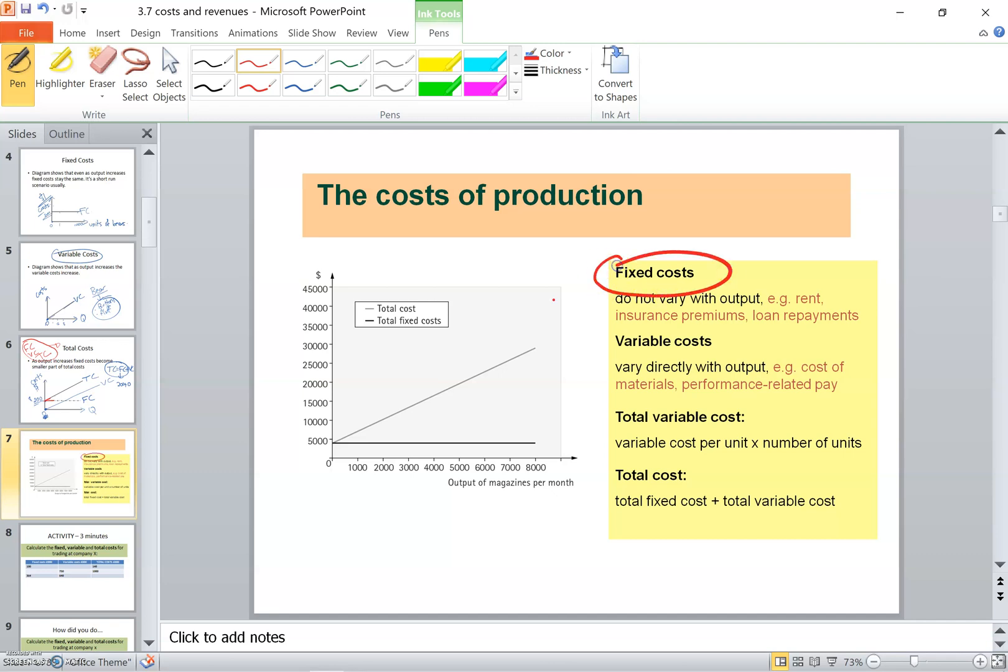Fixed costs, they do not vary with output. These are examples you can always talk about: rent, insurance premiums, and loan repayments. Variable costs, on the other hand, they vary directly with output. The more the output produced, the more the variable cost. For example, it could be cost of materials, performance-related pay. This one, for example, the more the worker is performing, the more productive he is, I might give him an increase in his wage. So this is also a variable cost.